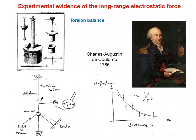Experimental evidence of the long-range electrostatic force was first collected by Charles Augustin de Coulomb in 1785. He devised an instrument known as the Coulomb torsion balance, a historical print of which is shown at the top left. In a torsion balance, a spherical conductor is attached to a torsion wire. This conductor can be charged, and if a second charged conductor is brought close to it, the wire experiences a deflection. This deflection can be made visible using a light source and a mirror, with the light beam reflected onto a scale.